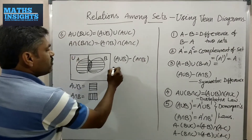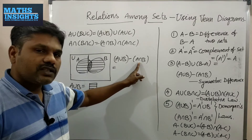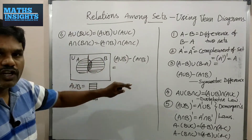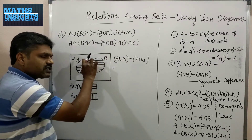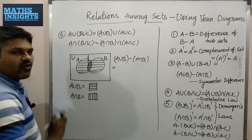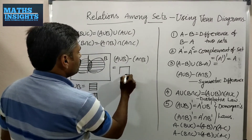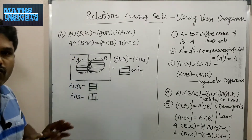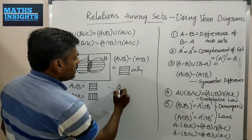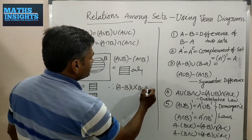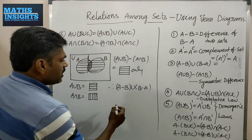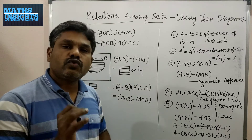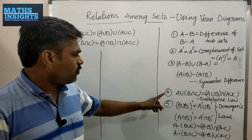For A∪B minus A∩B, you subtract the area showing A∩B from A∪B. A∪B is the total area; A∩B is the overlapping region. Removing the intersection leaves only the two outer parts, shown with horizontal lines only. Observing both diagrams, A minus B ∪ B minus A equals A∪B minus A∩B — this is called the symmetric difference of two sets A and B.